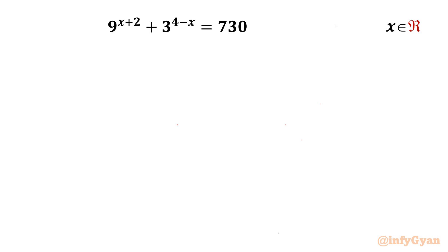Welcome back to Infigyan friends. Today in this video we will be solving one very interesting and challenging algebraic puzzle from exponential equations. It is 9 power x plus 2, plus 3 power 4 minus x, equal to 730. We have to find out all real solutions.